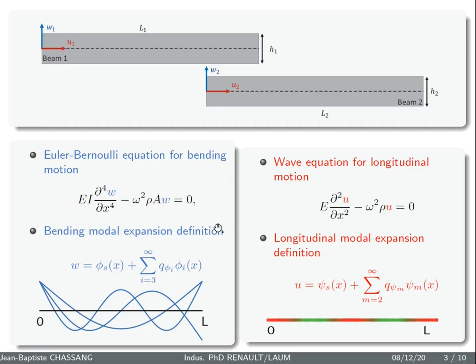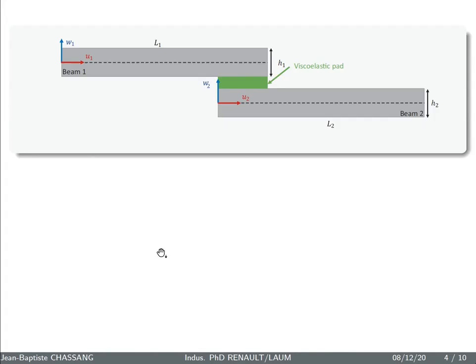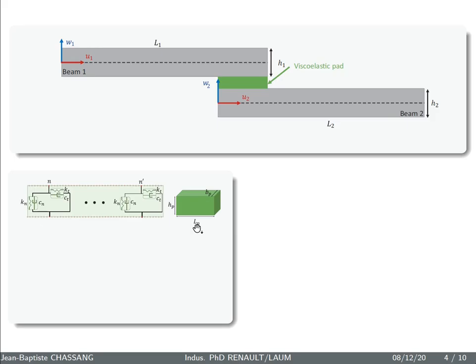On the bottom left of the slide we describe the bending motion by the Euler-Bernoulli equation with a modal series having two rigid components and an infinity of modal deformation. At the bottom right we use the wave convention and another modal series to describe the compression movement. You have also some example of the first modal shapes you can have in flexion and in compression movement.